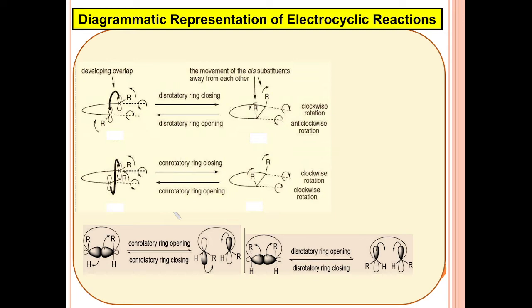Three major conditions need to be considered for electrocyclic ring opening or ring closing: the symmetry of the terminal orbitals in the conjugated pi system, the terminal p orbitals forming the sigma bond by maintaining the phase distribution of the lobes after rotation, and the two possible modes of rotation — the conrotatory mode and the disrotatory mode.